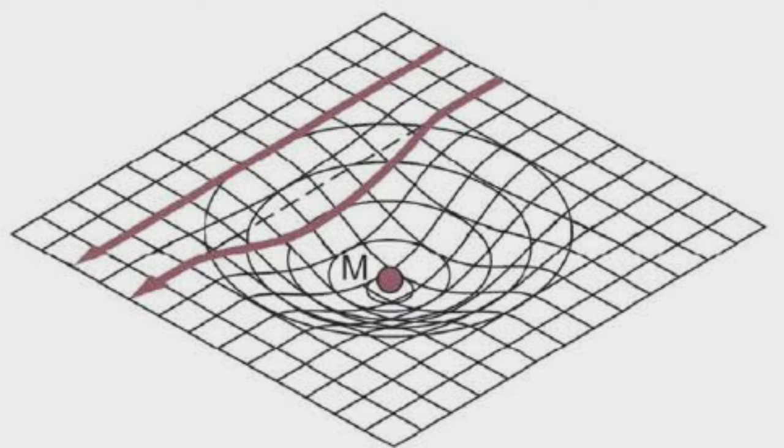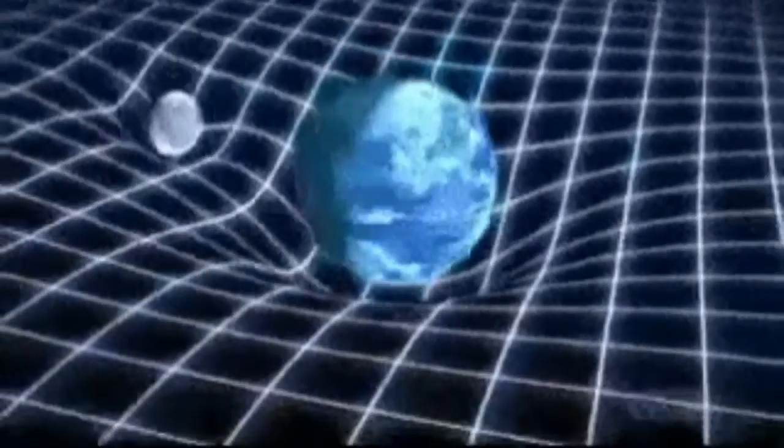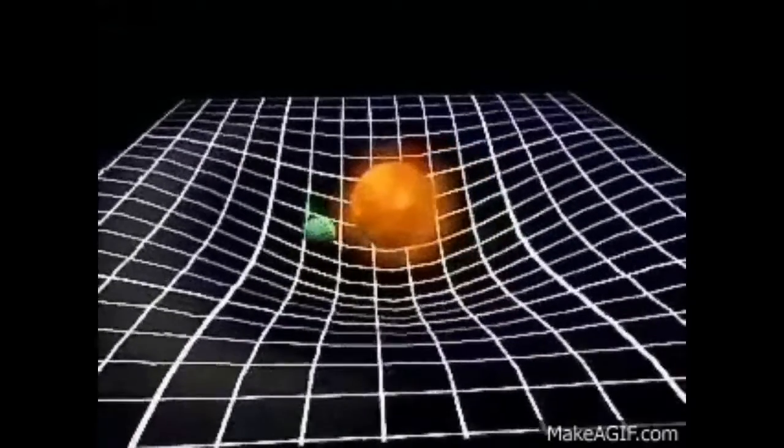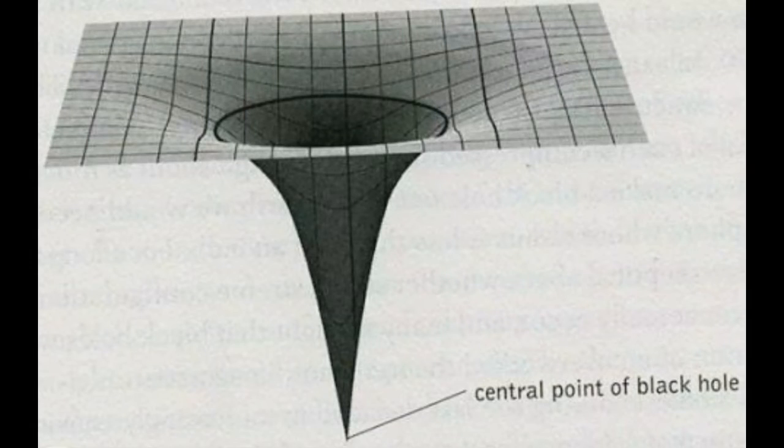As per Einstein, gravity is caused when some mass causes a bend in space-time. More mass means more gravity. But the black hole is defined as a puncture in space-time that is very deep, where gravity becomes very high and even light cannot escape from it.